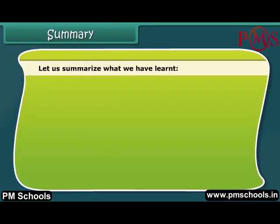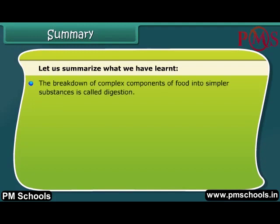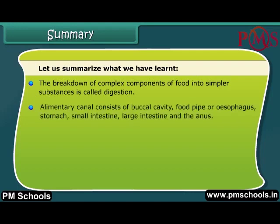Summary: The breakdown of complex components of food into simpler substances is called digestion. The alimentary canal consists of the buccal cavity, food pipe or esophagus, stomach, small intestine, large intestine, and the anus.